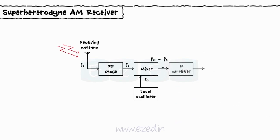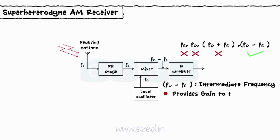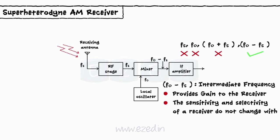Intermediate frequency (IF): Out of the four frequencies produced by the mixer, the difference component FO minus FS is selected and all others are rejected. This difference component is called the intermediate frequency. This IF signal is then amplified, providing most of the gain to the receiver. Hence, the sensitivity and selectivity of the receiver do not change with a change in incoming frequency.